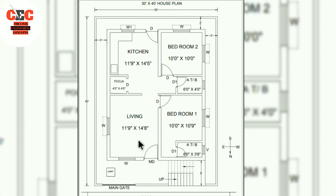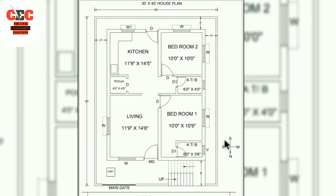Coming to the living room, the size of the living room is 11 feet 9 inches by 14 feet 8 inches. The kitchen is provided in the southeast corner and the size of the kitchen is 11 feet 9 inches by 14 feet 5 inches. In the kitchen, a back door is provided.